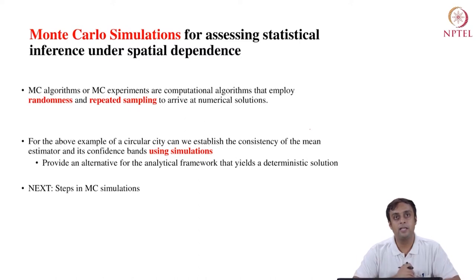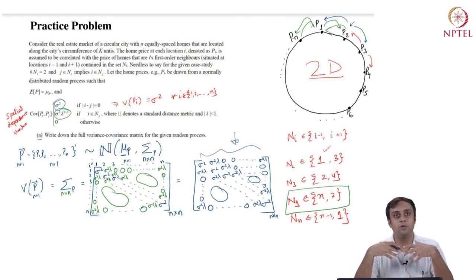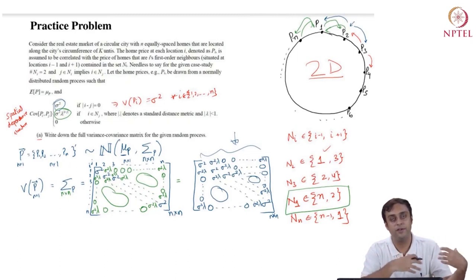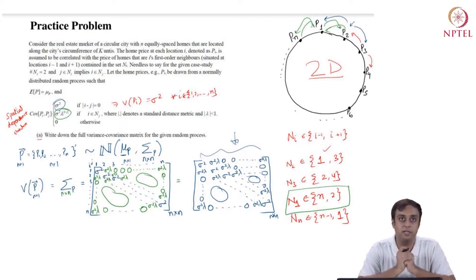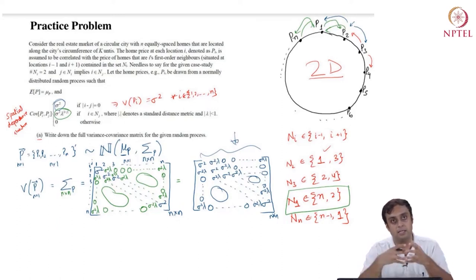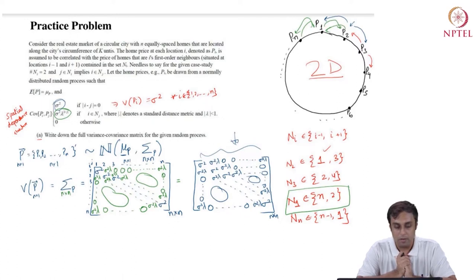Let's begin looking at the steps in Monte Carlo simulations. Before we do that, I just want to give you a very quick recap of this practice problem that we have worked with, where we introduced the circular city and solved for the mean estimator, the variance estimator, the standard deviation estimator, and the 95% confidence bounds for home prices spatially distributed on a circle with a circumference of K units.